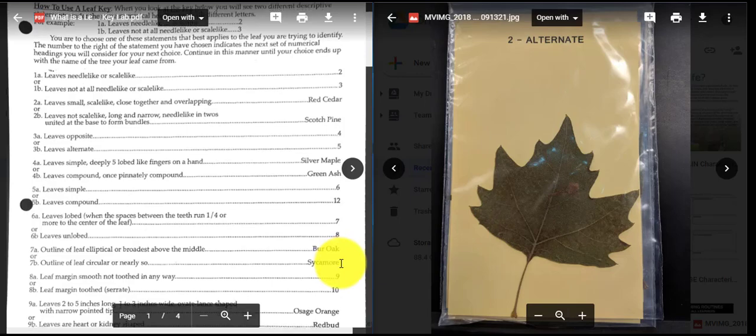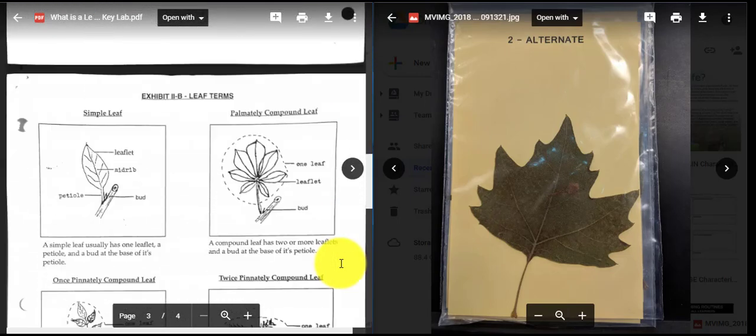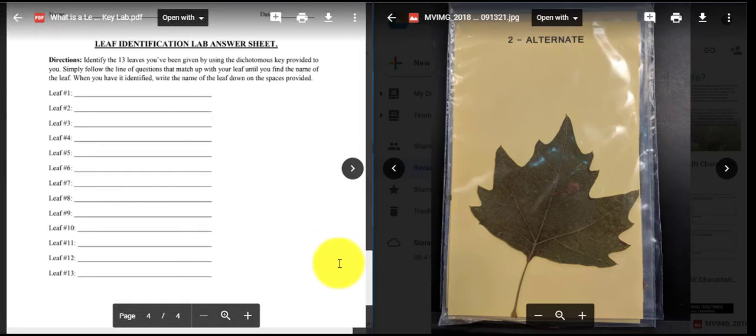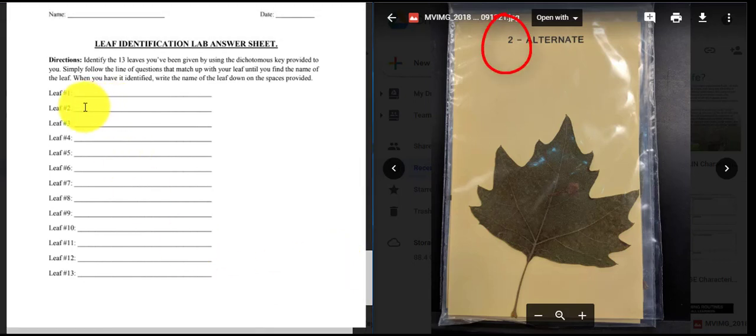Once I've identified that, I'm going to move down to my answer sheet. Again, this is the last page. And in leaf number two, I'm going to fill in the name sycamore. And that's all you have to do. You just have to follow the statements and follow where it is that they tell you to go. And eventually you're going to come up with the identification of the leaf. So what you and your group are going to do is this.